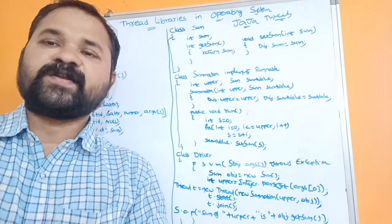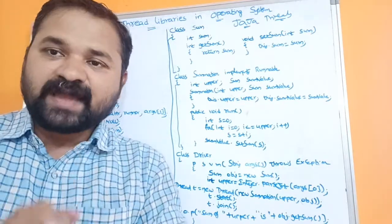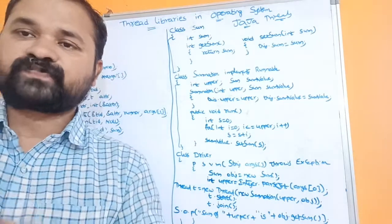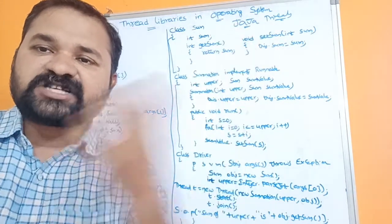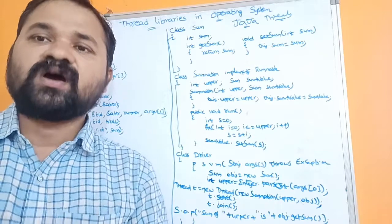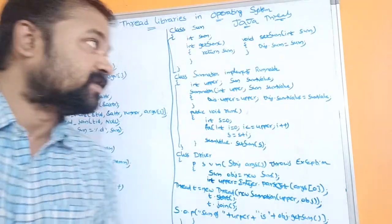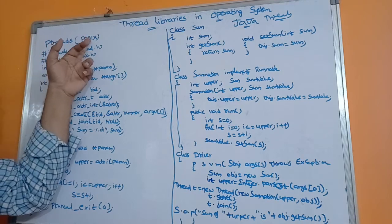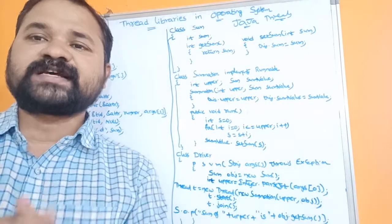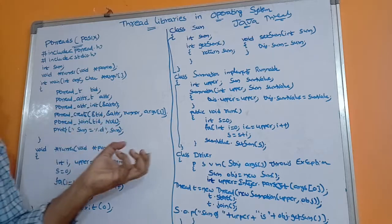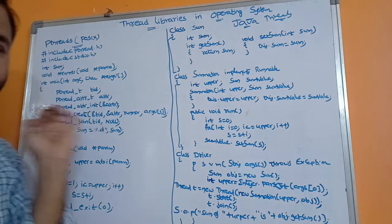Let's see about thread libraries in operating systems. In order to implement threads, we use thread libraries. A thread library provides an API — Application Programming Interface — which contains a collection of functions useful for creating and managing threads. There are mainly two types: the first is pthreads (POSIX threads) and the second is Java threads. In this video, we will discuss how to implement both.